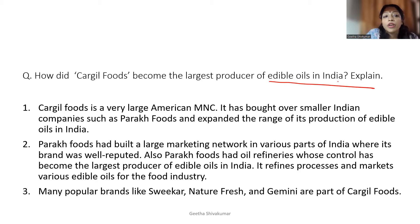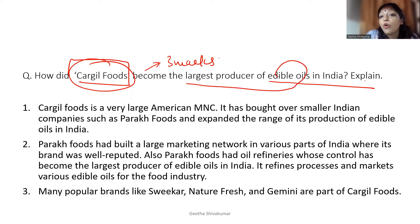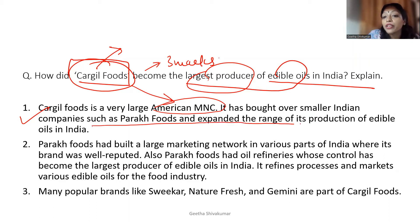The first question: How did Cargill Foods become the largest producer of vegetable oils in India? This is a source-based question from the textbook, but apart from source-based questions, they can also ask it as a standalone three-marks question. Cargill Foods is a very large American MNC — it was not an Indian company.